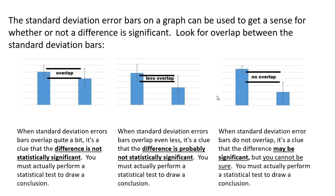Standard error or standard deviation error bars on a graph can be used to get a sense of whether or not there is a difference. If there's a lot of overlap, it's not statistically significant. If there's just a little bit of overlap, it's probably still not statistically significant. When there's no overlap, it's highly likely that the means of two different data sets are not the same and the difference may be significant — though not 100% certain, which is why we also do something like a chi-square test.